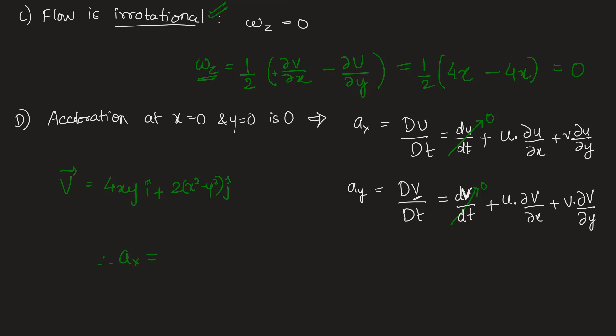Therefore Ax equals u, which is 4xy, times partial u/partial x. Derivative of this term with respect to x is 4y, plus v, that is 2 times x squared minus y squared, times partial u/partial y, which is 4x. When we put x and y as zero, we can clearly see first and second terms both turn out to be zero, and therefore acceleration in x direction is zero.